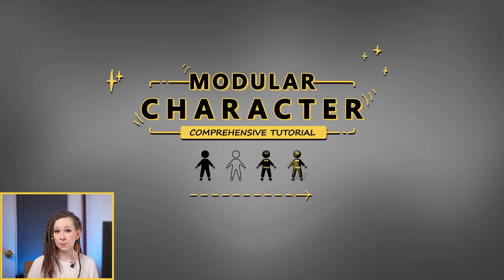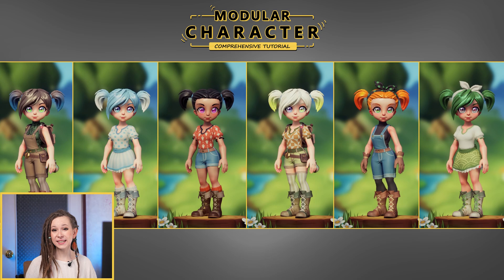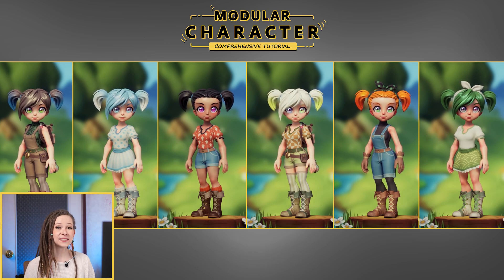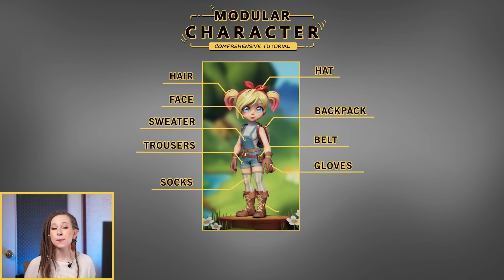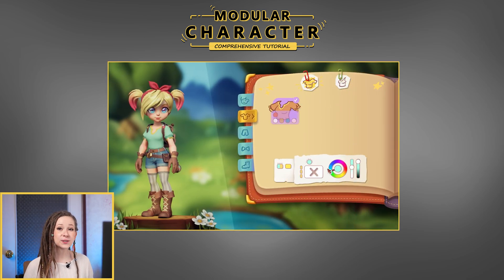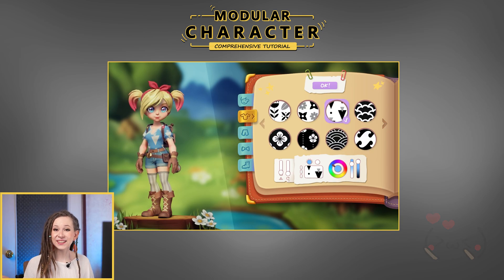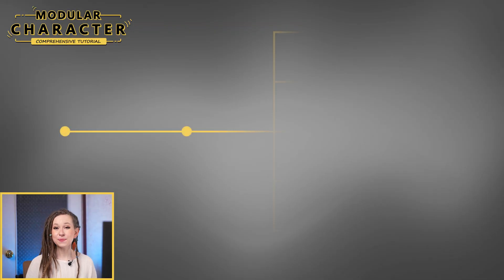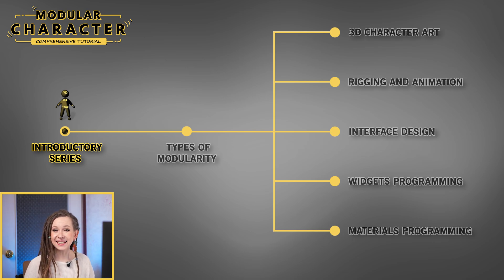Hi there! I'm really excited to share a project that I've been working on for the past year. It's a comprehensive tutorial that covers everything you need to know about creating modular characters. We will create a character consisting of 10 modular clothing and body parts. You will be free to customize each piece with colors and texture patterns to your liking. This project has been quite extensive, so I will strive to create a clear and easy structure to help us all navigate it smoothly.